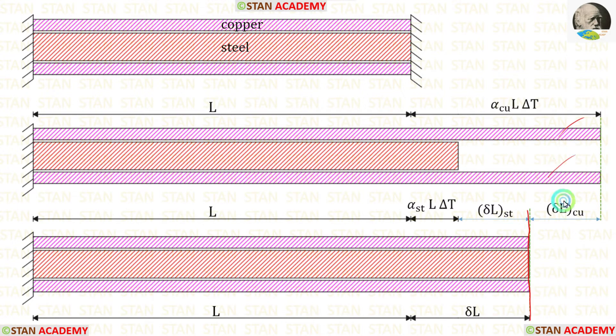To come to this intermediate position, copper has to compress by delta L Cu. So in copper there will be compressive stress. To come to this intermediate position, steel has to expand by delta L ST. So in steel there will be tensile stress.